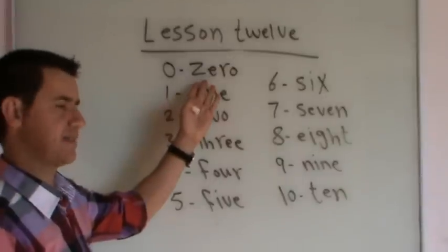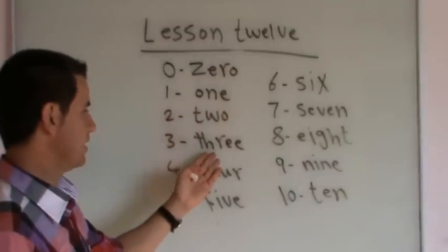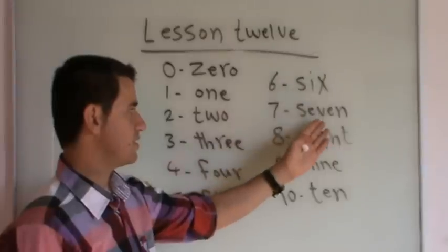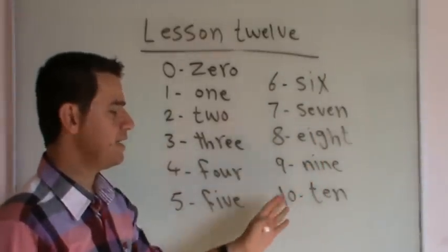Zero sifr, one yak, two du, three seh, four chawar, five penj, six shish, seven haft, eight hasht, nine no, ten deh.